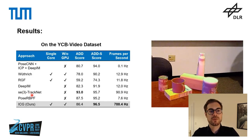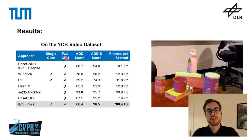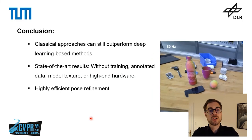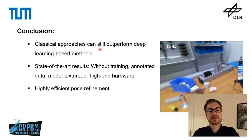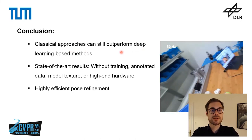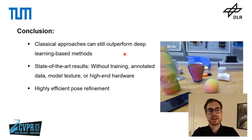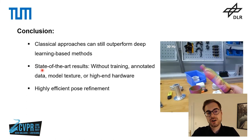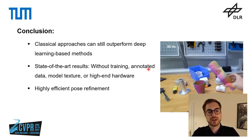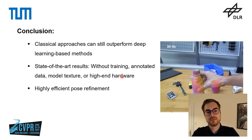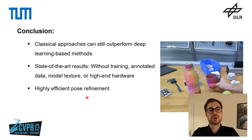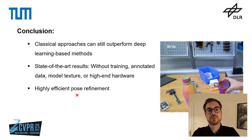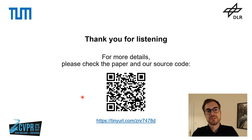In conclusion, our research shows that classical approaches can still outperform deep learning-based methods — definitely with respect to efficiency, but also with respect to tracking quality. Classical approaches can still be highly competitive. Our approach achieves state-of-the-art results without requiring training, annotated data, model texture, or high-end hardware. Additionally, our approach can also be used for highly efficient pose refinement. Thank you very much for listening, and for more details please check our paper and our source code, which is publicly available.